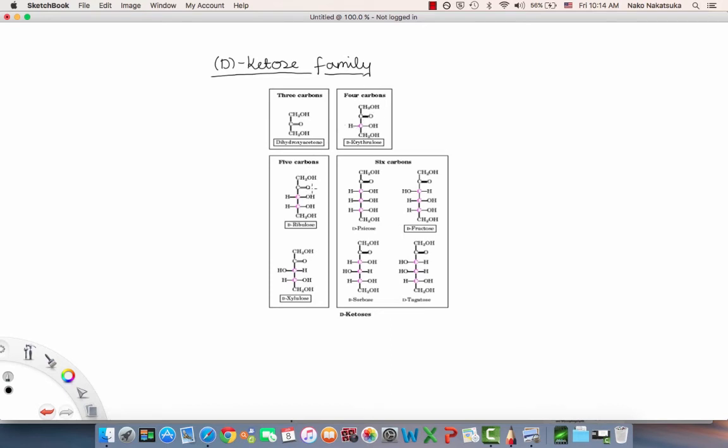Now if we have five carbons, we have D-ribulose and D-xylulose. Since we have two stereocenters, we have four possible isomers, and we're looking at the two that are D. The ones that are boxed are ones that you should pay extra attention to and make sure that you memorize in case you need to know it for your particular course.